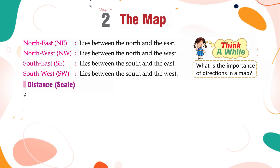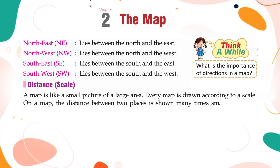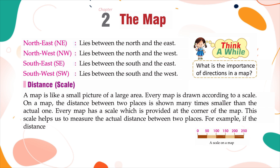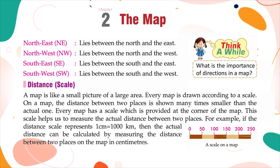Distance or Scale. A map is like a small picture of a large area. Every map is drawn according to a scale. On a map, the distance between two places is shown many times smaller than the actual one. Every map has a scale which is provided at the corner of the map. This scale helps us to measure the actual distance between two places. For example, if the distance scale represents one centimeter equals to 1,000 kilometers, then the actual distance can be calculated by measuring the distance between two places on the map in centimeters.